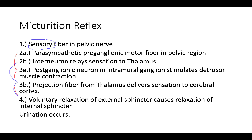Pathway A is going to go through the parasympathetic preganglionic motor fiber in the pelvic region. Parasympathetic is autonomic preganglionic, meaning that's before the brain for the most part, and it's going to be a motor fiber in this pelvic region. Then what's going to happen: you have the postganglionic neuron in the intramural ganglion and it stimulates the detrusor muscle contraction.